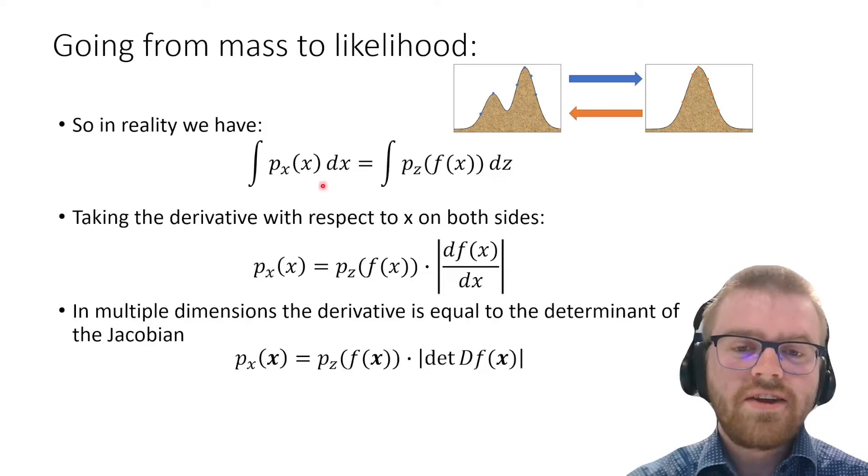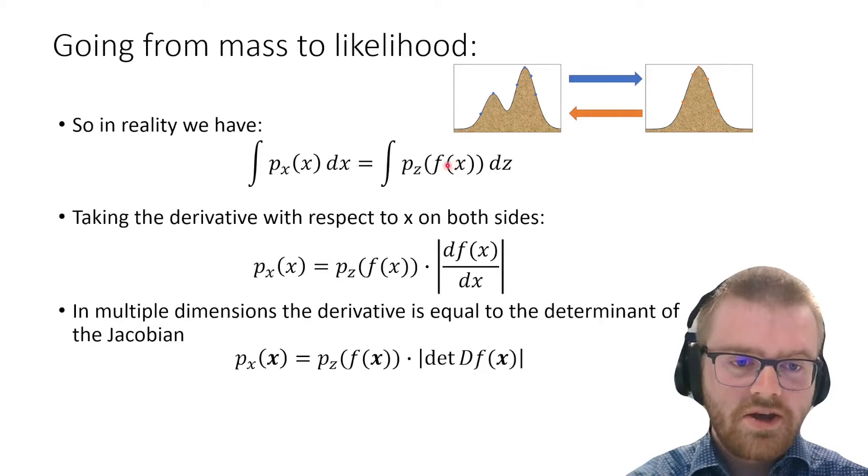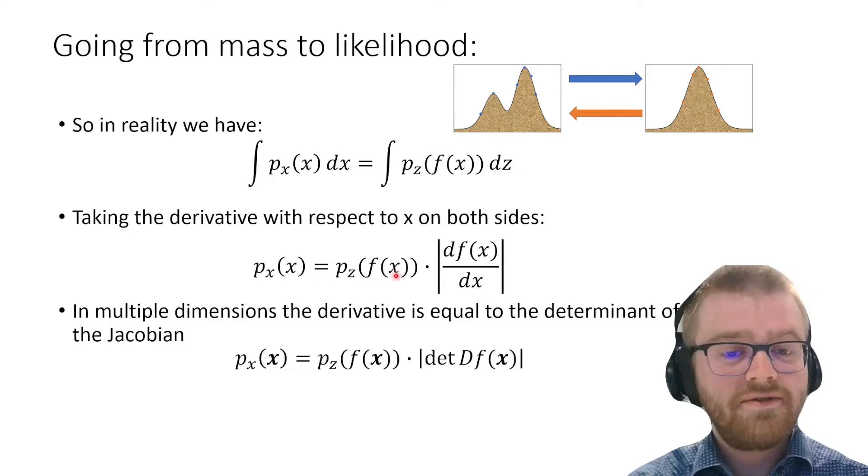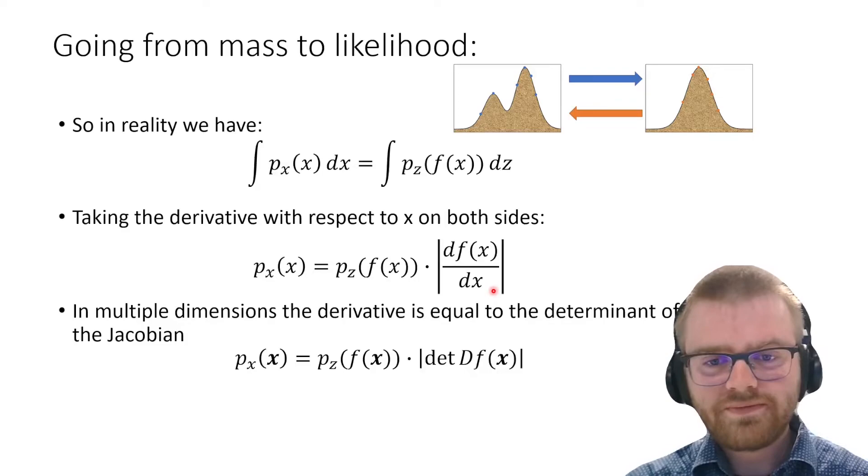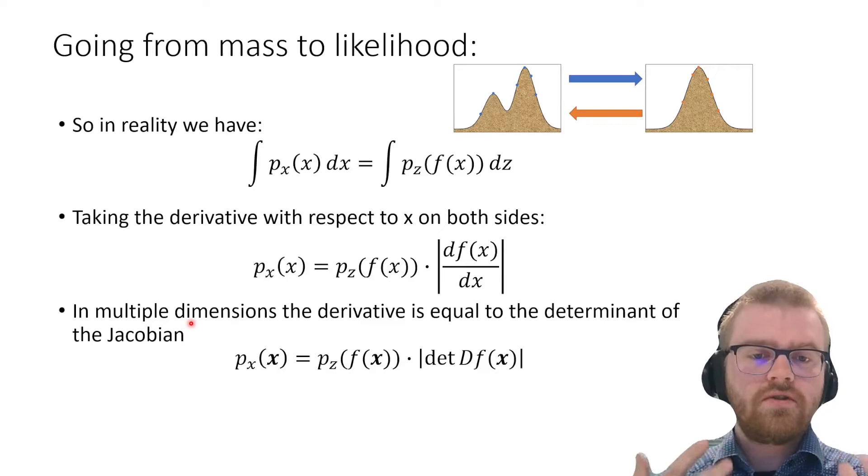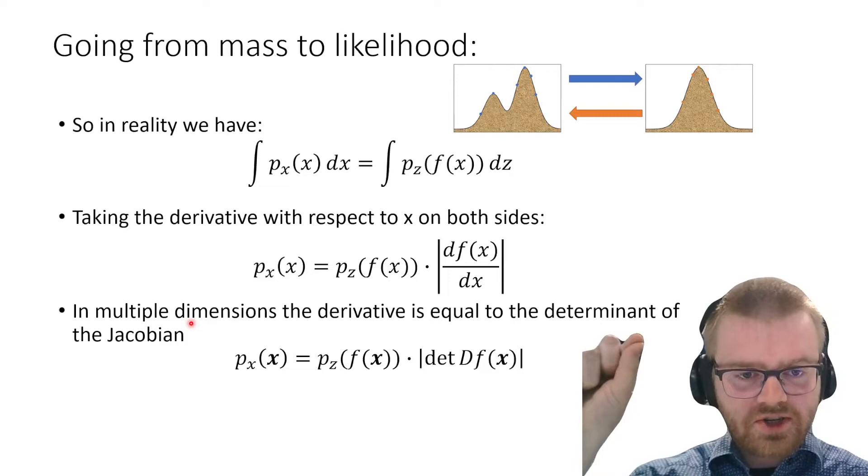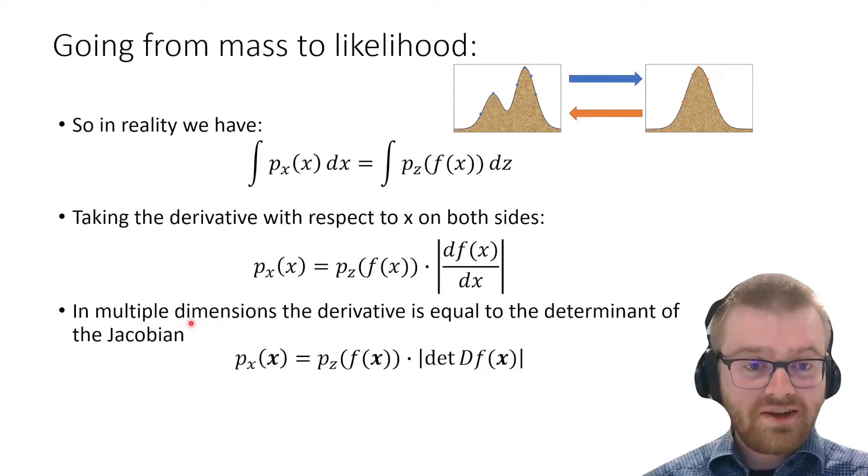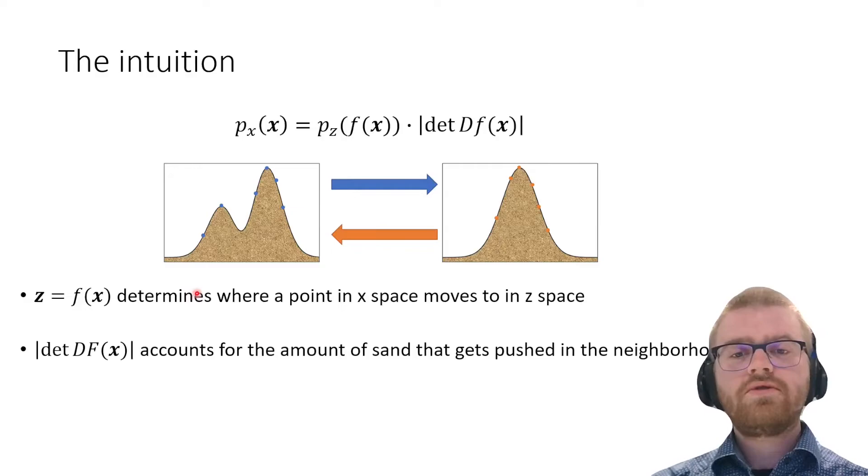If we take the derivative with respect to x on both sides, on the left this integral nicely goes away, but on the right we have to be careful. The product rule states we get that thing itself times the derivative of that function. We're taking the absolute value because probability should always be positive. In multiple dimensions, this derivative equals the determinant of the Jacobian—a matrix of all partial derivatives. The determinant accounts for the change in volume, how much sand is being pushed away versus squished at this position.